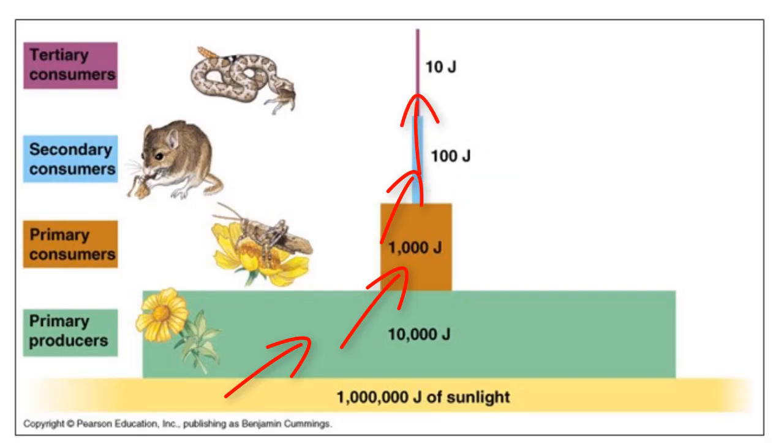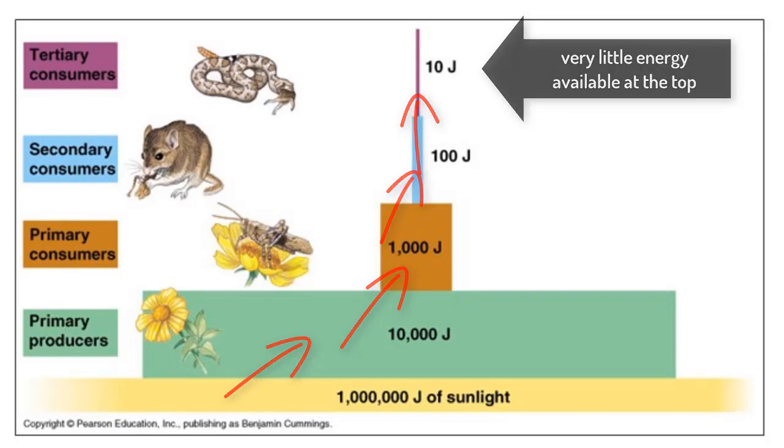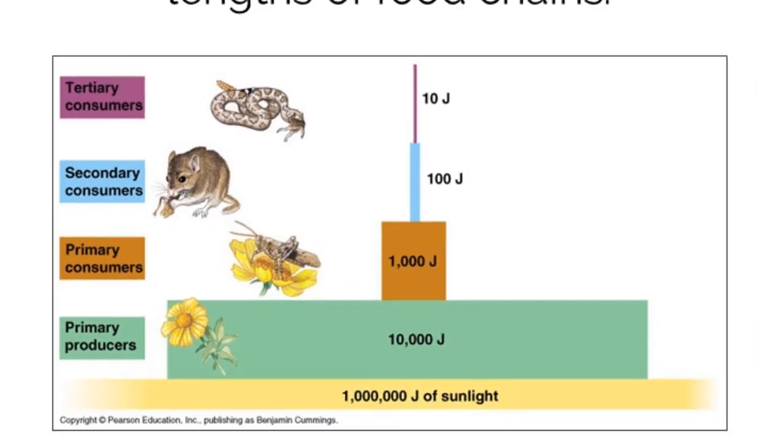The massive amount of energy loss between trophic levels restricts the size of the food chain, because the higher up we go, the less energy we have available for the next organisms. For this reason, we will never find more tertiary consumers than secondary consumers in an ecosystem, because there's not enough energy available to support larger amounts of biomass.